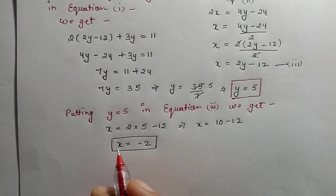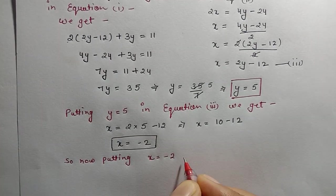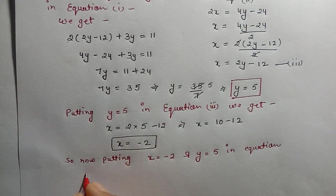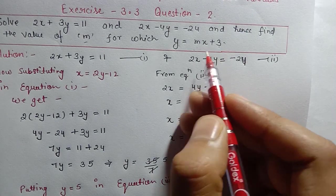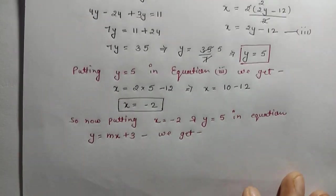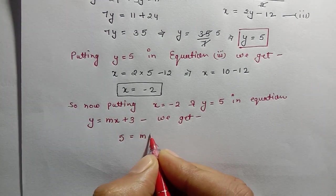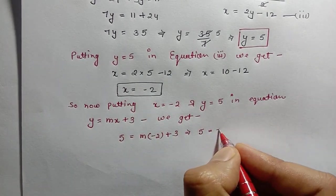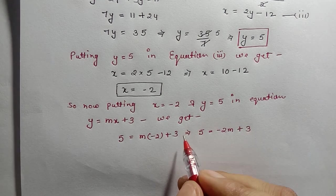Now putting x = -2 and y = 5 into the equation y = mx + 3. We get: 5 = m(-2) + 3, which gives us 5 = -2m + 3.